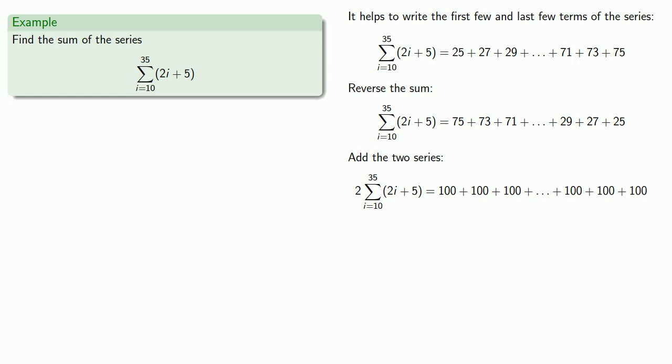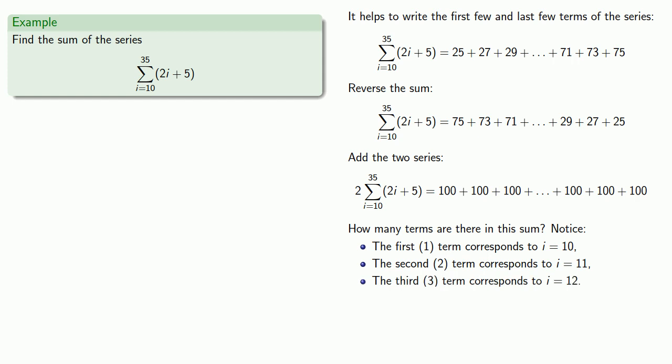Now for the hard part. How many terms are there in this sum? Well we might notice the following. The first one term corresponds to i equals 10. The second two term corresponds to i equals 11. The third three term corresponds to i equals 12. And the last term corresponds to i equals 35.